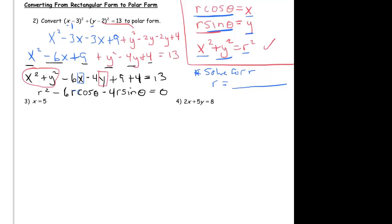And so now is when I group my x squared plus y squared together, and I'll put my minus 6x next to it and my minus 4y, and then I got my 9 and my 4 there.